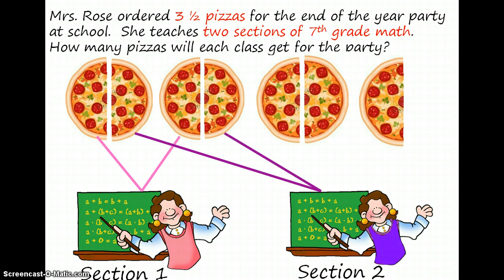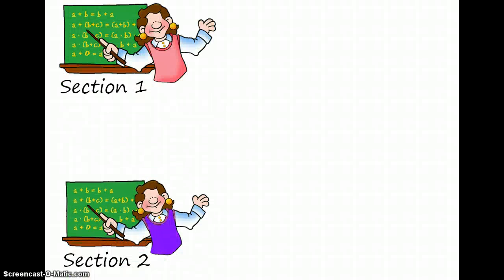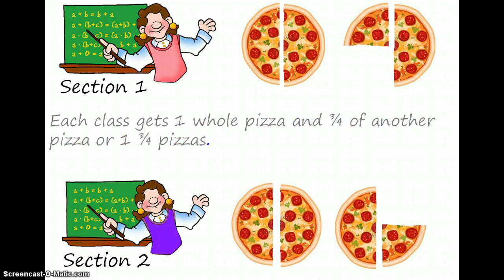Each class gets one whole pizza and half of another pizza, but we still have half of a pizza left over. So we cut this pizza in half so that each class will get another fourth of a pizza. In total, each section gets one pizza and three fourths of another pizza, or one and three fourths pizza. If we cut half pizzas in half making fourths, we can also say that each class gets seven fourths of a pizza — that's seven fourths.